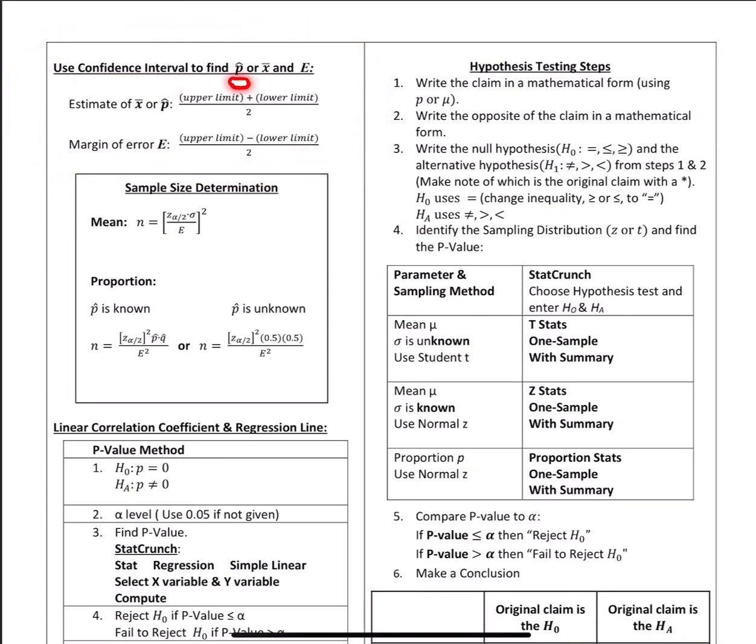So what we just did is we use the confidence interval to find P hat and the error, or same thing for X bar and the error. You would use these two formulas. I hope that clears things up.